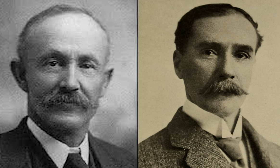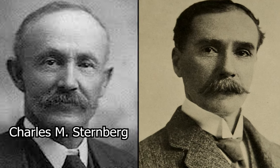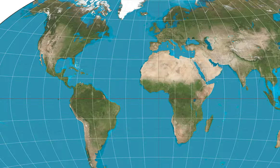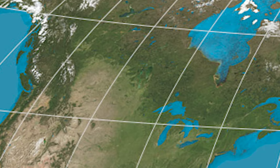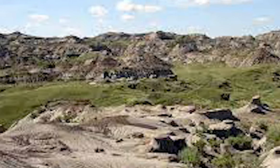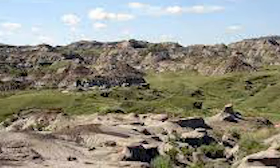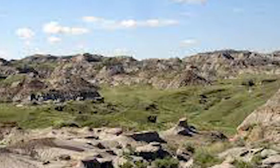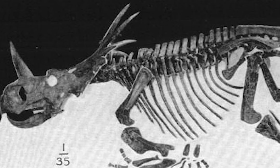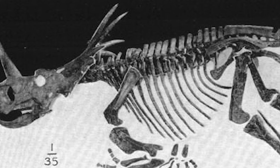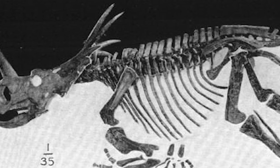Styracosaurus was first discovered in 1913 by C.M. Sternberg, and later named by paleontologist Lawrence Lambe. This original fossil was located in modern-day Canada, in the province of Alberta — specifically an area named Dinosaur Provincial Park, renowned as one of the richest dinosaur fossil sites in the world, with an estimated 58 species having been discovered there. This original specimen was named Styracosaurus albertensis, with 'albertensis' referencing the province in which it was originally discovered.